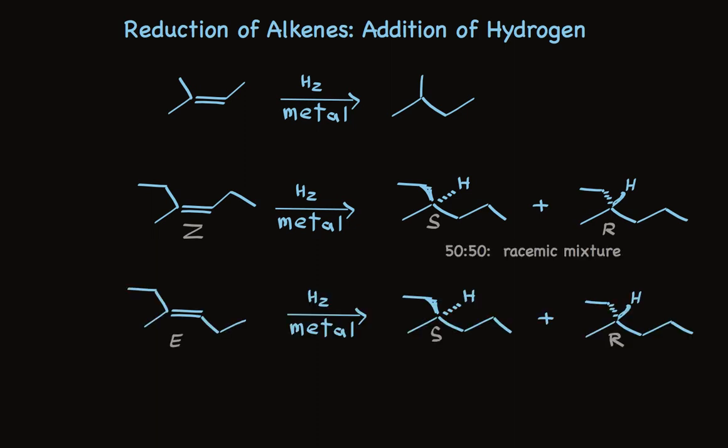Now take a look at the E isomer. When we do the reduction, we get the very same result — a racemic mixture of the two enantiomers. Because we're making only one stereogenic center in the product, whether we start with E or Z stereochemistry of the alkene is immaterial. We get exactly the same result.